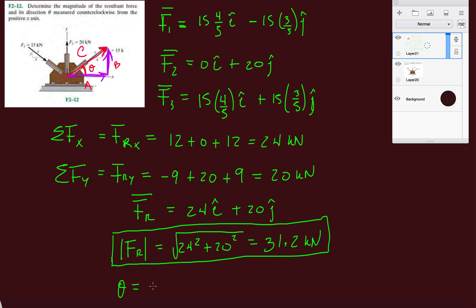And then theta, right? We said it's going to be SOHCAHTOA. So inverse tan opposite, which is B, which is our FRY, over adjacent, which is our X, FRX. And we get theta is about 39.8. Let's just say 40 degrees.